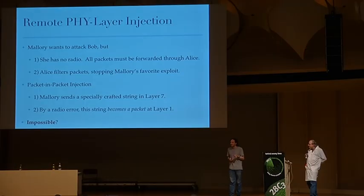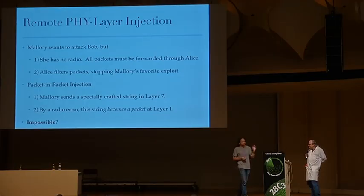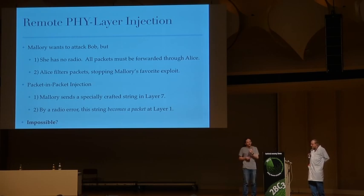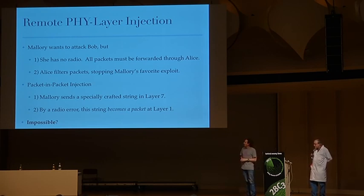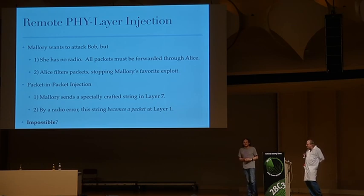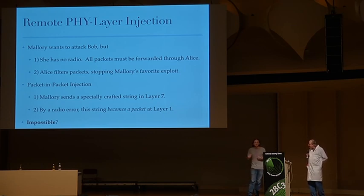A packet-in-packet injection works by specially crafting a string so that when it's sent at any higher layer, sometimes it gets lucky and drops out and becomes a layer one packet. You can take any wireless frame you want, wrap it with a bit of padding, and send it over the Internet as an email attachment, HTTP download, UDP frame, or ICMP ping — anything — so long as it's unencrypted and the wireless network supports variable frame length.